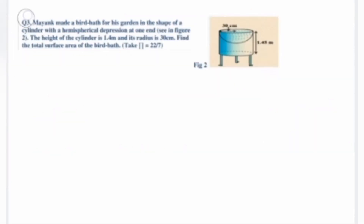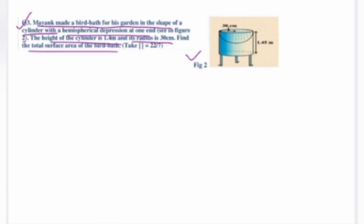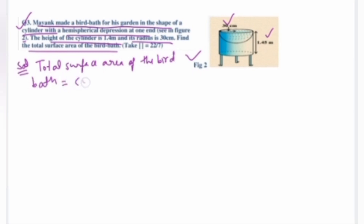Question number 3: Mayank made a bird bath for his garden in the shape of a cylinder with a hemispherical depression at one end. The height of the cylinder is 1.45 m (given as 1.4 m with radius 30 cm). Find the total surface area of the bird bath by adding the curved surface area of the cylinder and the curved surface area of the hemisphere.